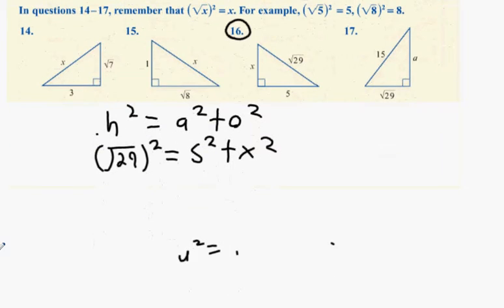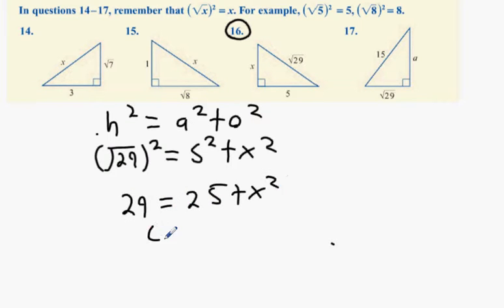Multiply them out, you get 29, and then you get 25 plus X squared. Bring that all to one side. 4 equals X squared. Square root of X equals 2.